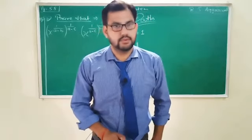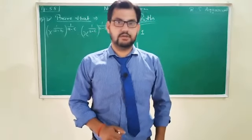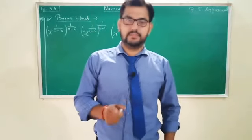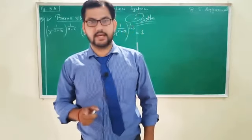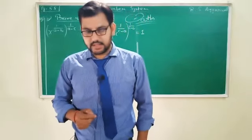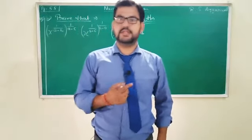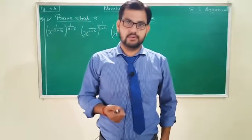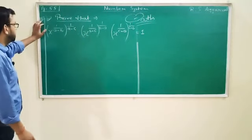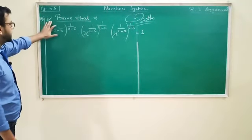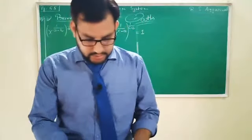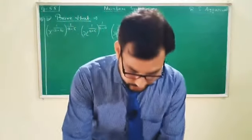Good morning students. Let's continue our topic Number System. In Number System, we have some previous questions remaining — the last questions, question number 15 part second, 17 and 18. We are starting those now. Question number 15 part second: prove that this value is equal to 1. This is exercise 1G.